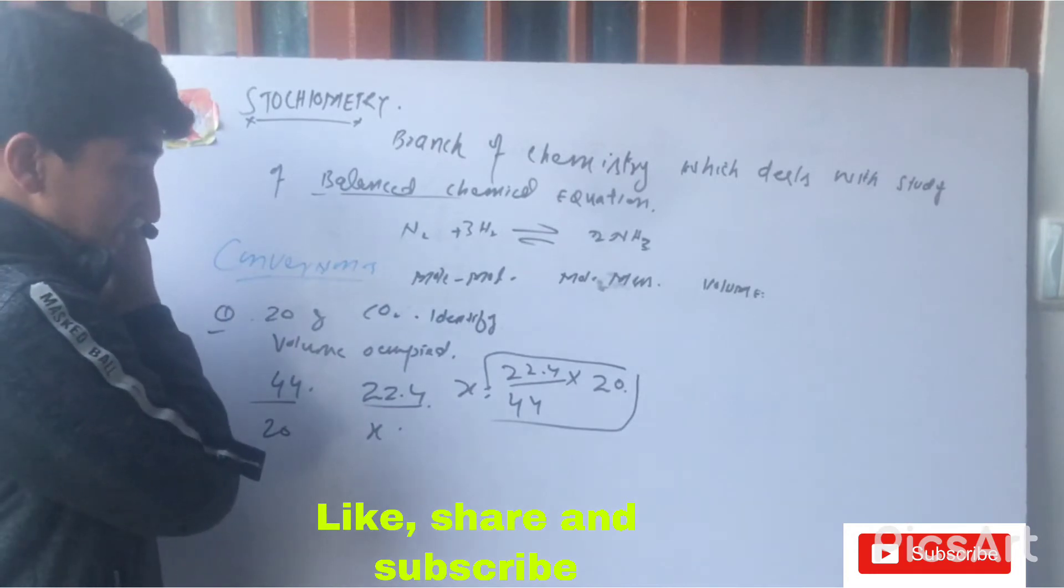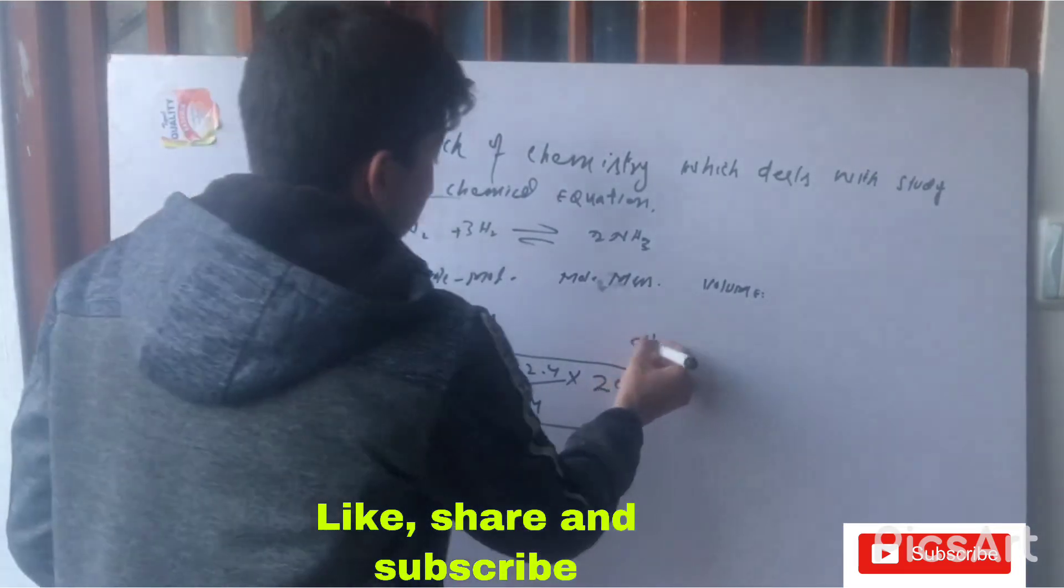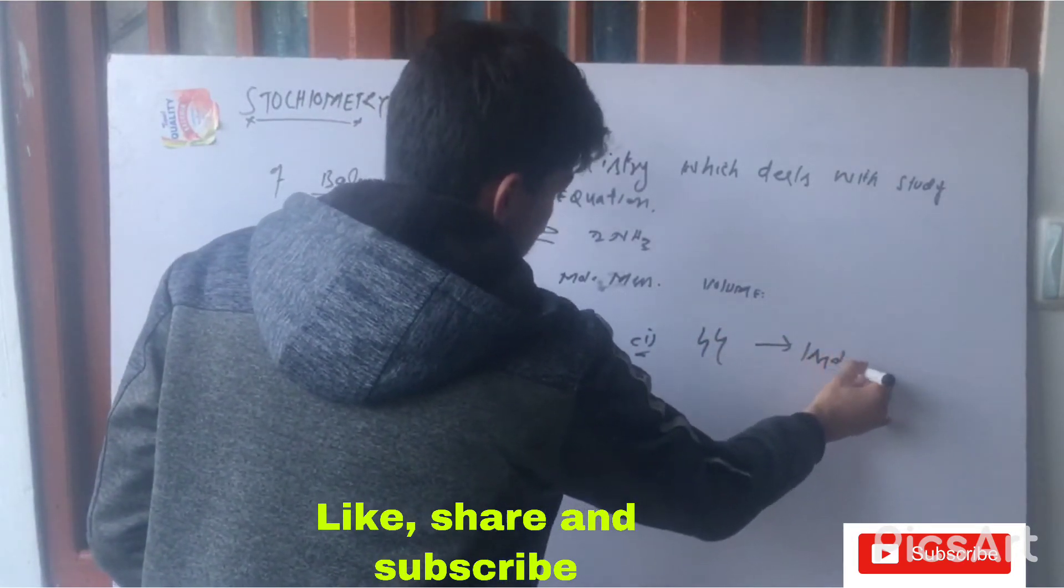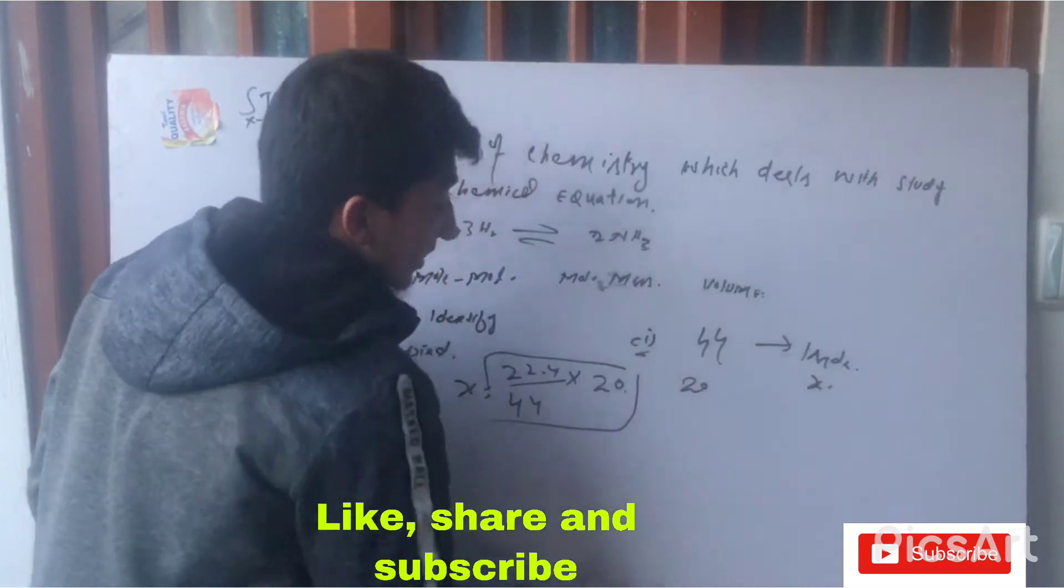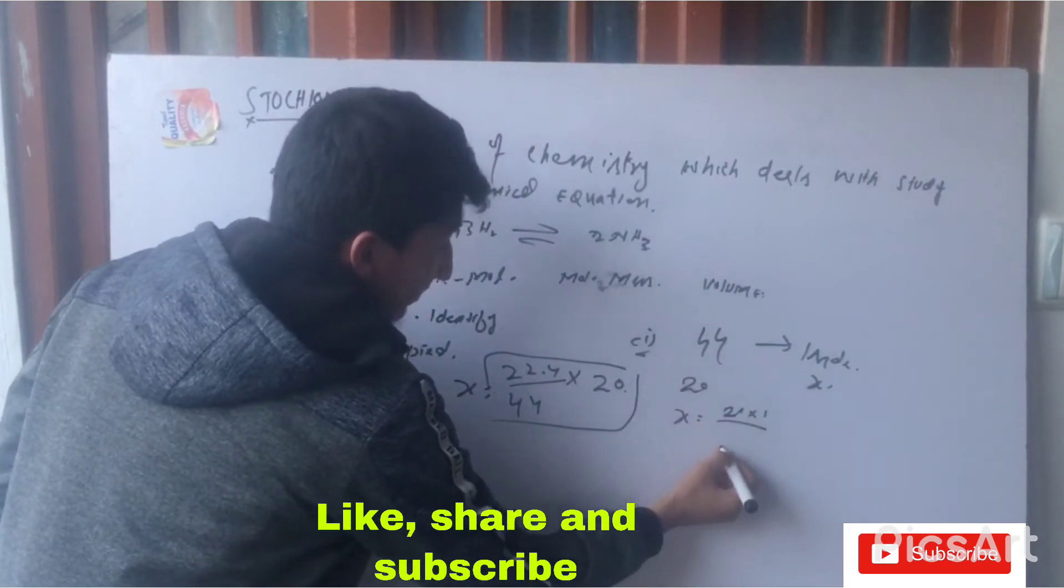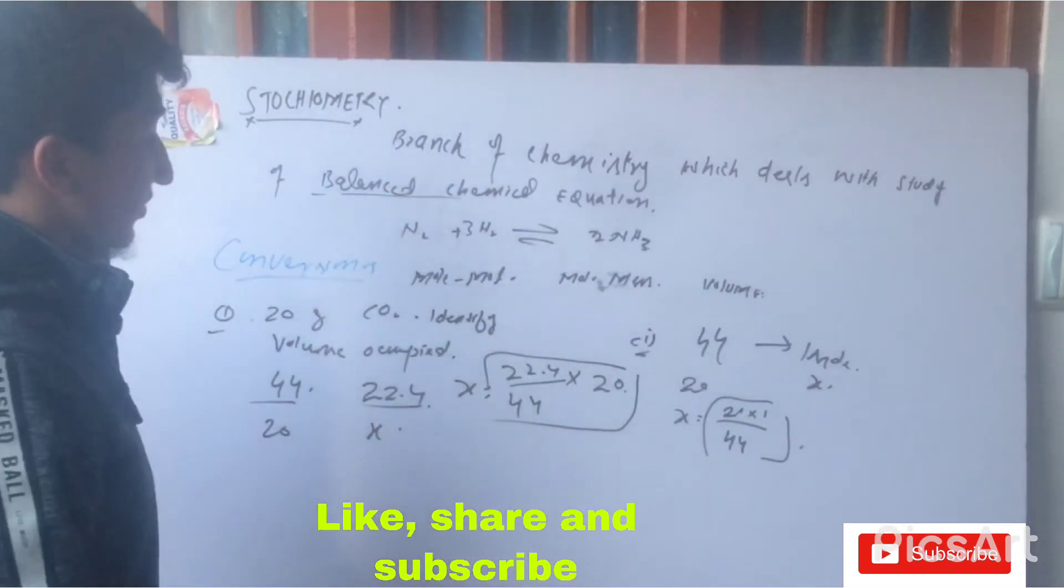Now if they ask, 20 grams of carbon dioxide contains how many moles? We know that 44 grams contains 1 mole, so 20 grams will contain how many moles? So x equals 20 into 1 divided by 44. This is the valid answer for this question.